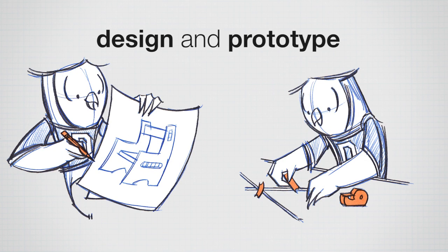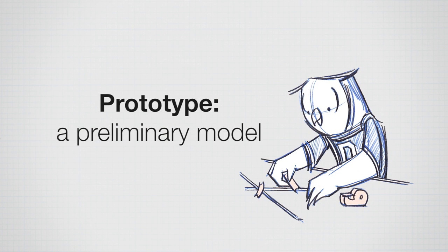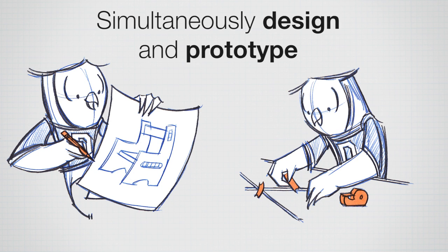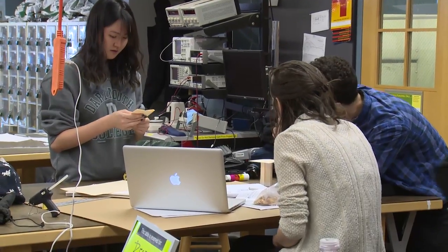I purposely put designing and prototyping together in a single phase since I want to encourage you to build early. You can sketch designs — that's a great way to represent what's going to happen — but actually building a prototype, which is just a preliminary model of your new product or process, is a critical part of the design process and it's better to start that early. Too often people sketch and try to perfect it on paper, and then as soon as they put it together, it just doesn't work. For the cardboard chair, you might start with just a sheet of paper — first a sketch, then cut the paper and put things together to see how they fit.